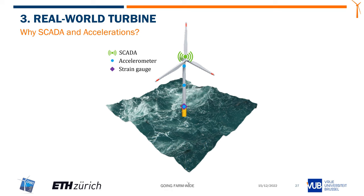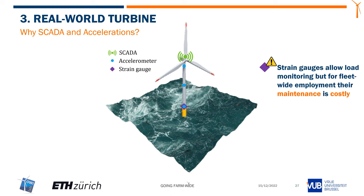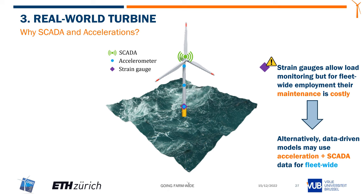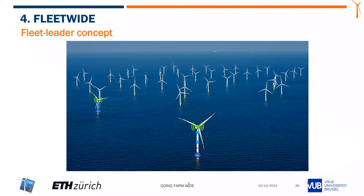For most of our turbines we have access to SCADA data, but we also install accelerometers and strain gauges. Strain gauges are excellent for load monitoring, but in the specific case of offshore wind, maintenance is extremely costly — you need trained people and boats. Operators are not interested in maintaining strain gauges for 20 to 25 years, which means we need more cost-effective solutions. Our idea is exactly to replace this with acceleration and SCADA data: train a model based on the ground truth from strain gauges, and then apply it farm-wide.